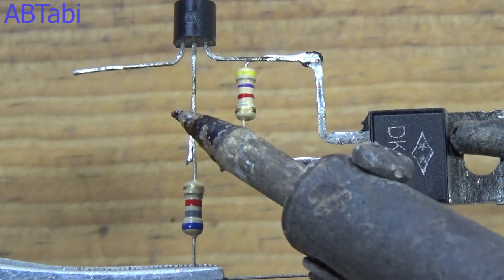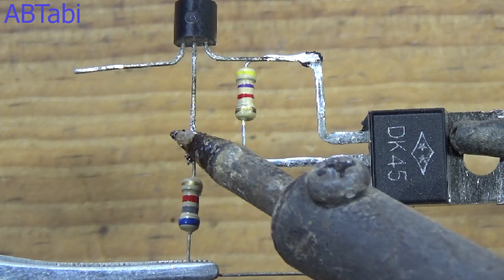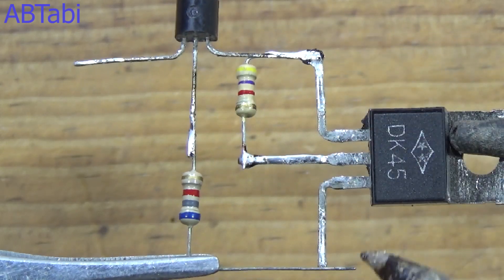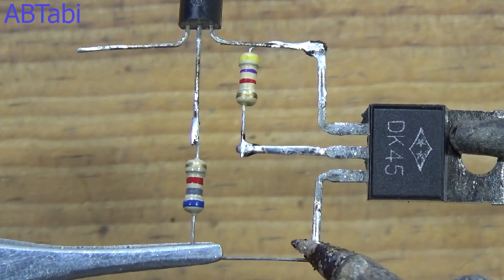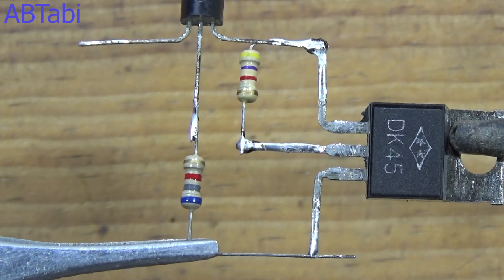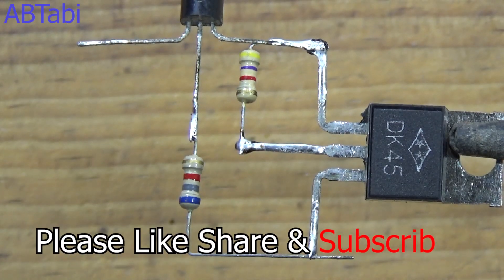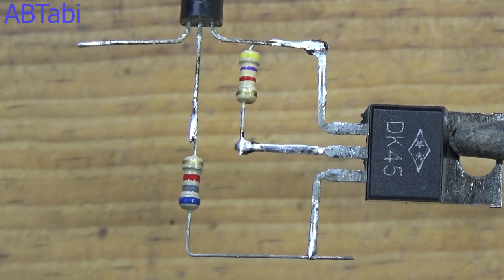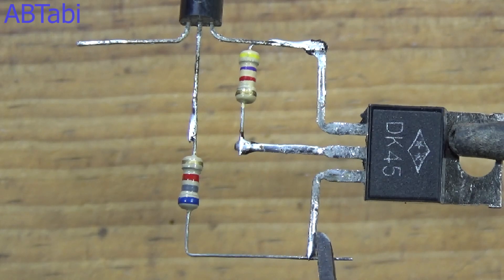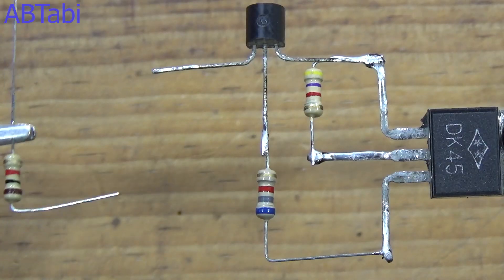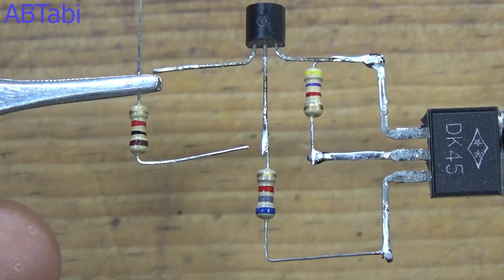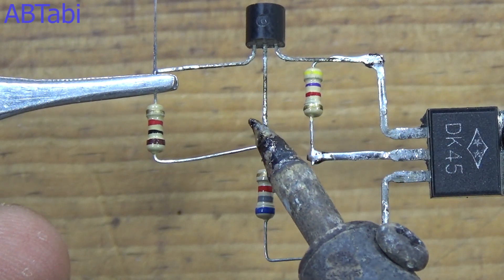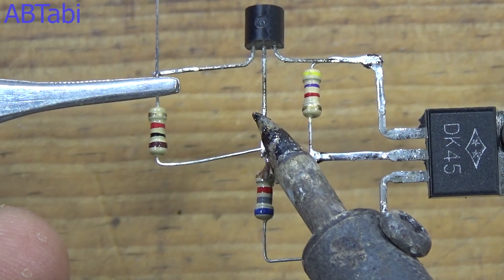6.8k resistor connects with BC547 transistor base to DK45 transistor emitter pin. 1k resistor connects with BC547 transistor base to emitter pin.